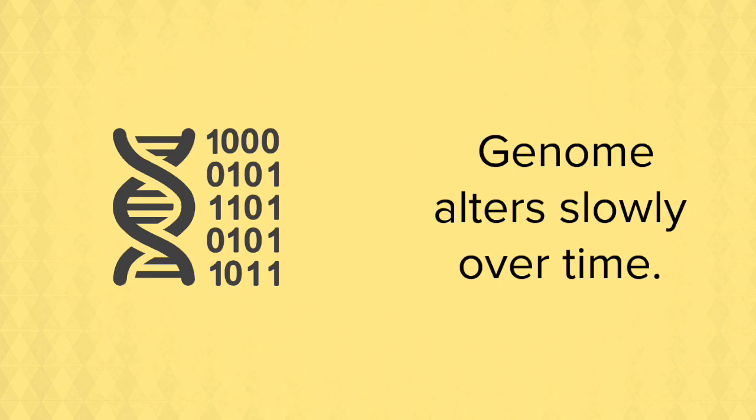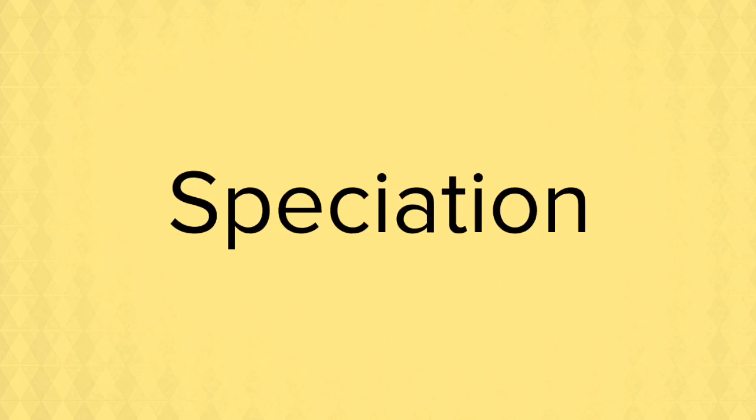So only those groups of finches that were best adapted to each particular island survived, thrived, passed on the gene and slowly the genome altered over time. When genomes alter slowly over time it gives rise to new species. This is known as speciation.